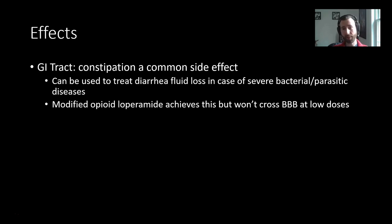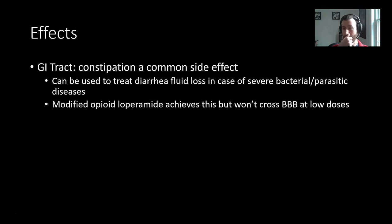There are also peripheral effects in terms of action on the GI tract. Constipation is an unfortunate common side effect, though this has proved useful as a therapeutic for diseases that cause diarrhea, such as bacterial or parasitic infections. A modified opioid called loperamide achieves the same effect but doesn't cross the blood-brain barrier at low doses, so it can produce this constipation-type effect without producing any central effects, which is ideal.